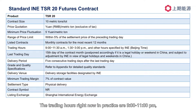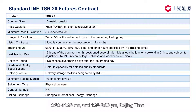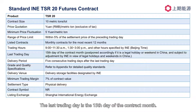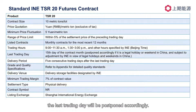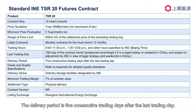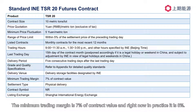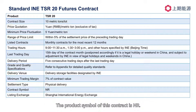The trading hours, currently in practice, are 9 to 11 PM, 9 to 11:30 AM, and 1:30 to 3 PM Beijing time. The last trading day is the 15th day of the contract month; if it falls on a public holiday or weekend in China, the last trading day will be postponed accordingly. The delivery period is 5 consecutive trading days after the last trading day. The minimum trading margin is 7% of contract value, and currently in practice it is 8%. The product symbol of this contract is MR.